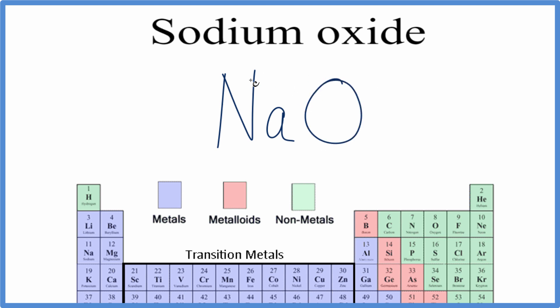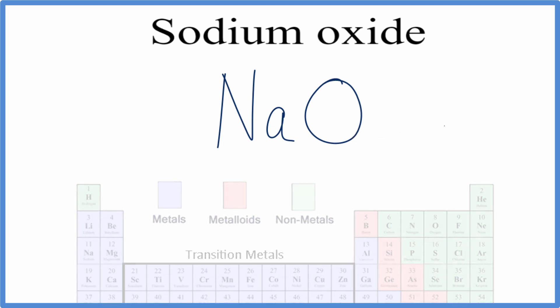We can see we have a metal, sodium (Na), and then a nonmetal, oxygen. That means it's going to be an ionic compound, and we need to balance the charges to get a net charge of zero.